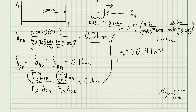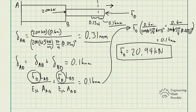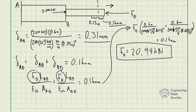Solving, we get the reactionary force FD equal to 20.94 kilonewtons. When doing the calculations, keep all units consistent — if you're using meters and kilonewtons, make sure everything is the same. It's good practice to convert everything to one unit system, perform all calculations, and then convert back at the end to avoid confusion.